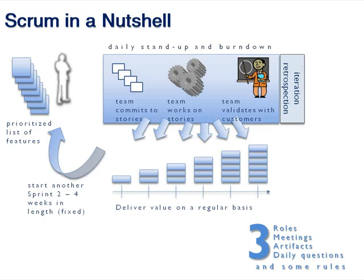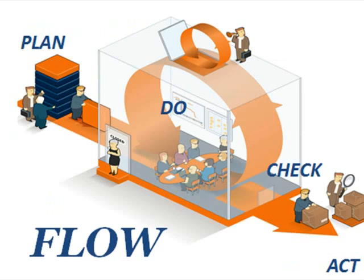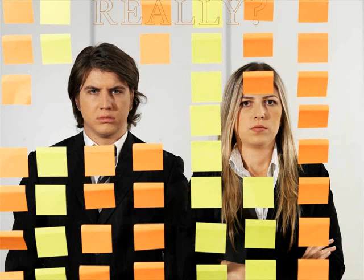Scrum is based on three simple things: you've got your product owner that prioritizes, the scrum master that's the team facilitator and coaches the team, and you have the team — those are the three roles. You have release planning, sprint planning, and a daily stand-up as the three meetings. The artifacts are the product backlog and the sprint backlog. The product backlog is the whole thing to be built; the sprint backlog is what you've committed to. You have burn-up and burn-down charts, and three daily questions: what have I done, what am I going to do, and what's in my way. It's a very simple, lightweight framework that's easy to start with in certain situations, and in some situations it's not.